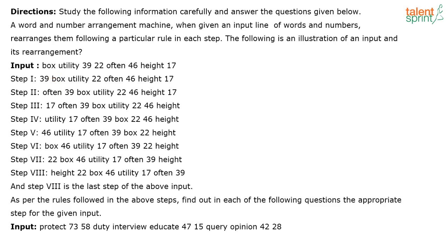When you look at the numbers, they are first arranging the odd numbers in descending order. The highest odd number here is 39, which is brought to the leftmost position. They are alternating between numbers and words. In the first step, they brought the highest odd number to the left. In the next step, they bring the next highest odd number, which is 17, towards the left.